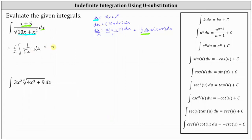We factor out the one half and then we have du, and then we have one over the square root of u, because u is equal to 10x plus x squared. Let's rewrite this as one half times the integral of one divided by u to the power of one half du. In order to apply the power rule of integration, we write this as u to the power of negative one half, giving us one half times the integral of u to the power of negative one half du. Integrating with respect to u gives us one half times u to the power of one half, divided by one half, plus C.